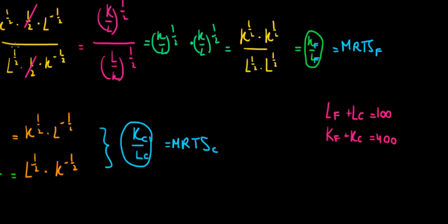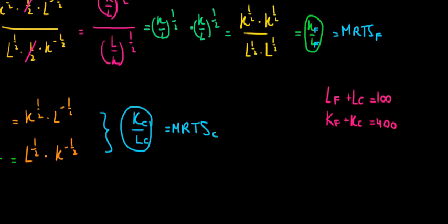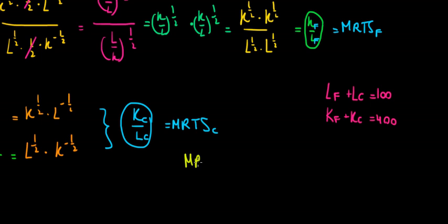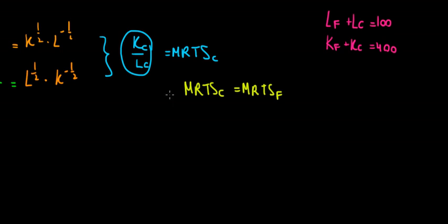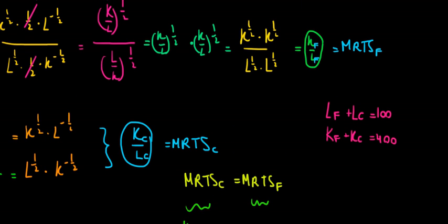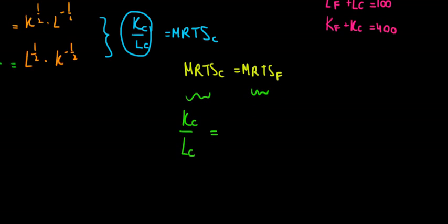We want the equilibrium — we want the contract curve — and on the contract curve, the MRTS must be equal. So the MRTS in clothing production must equal the MRTS in food production. That means the ratio of capital to labor in clothing production equals the ratio of capital to labor in food production: K_C / L_C = K_F / L_F.